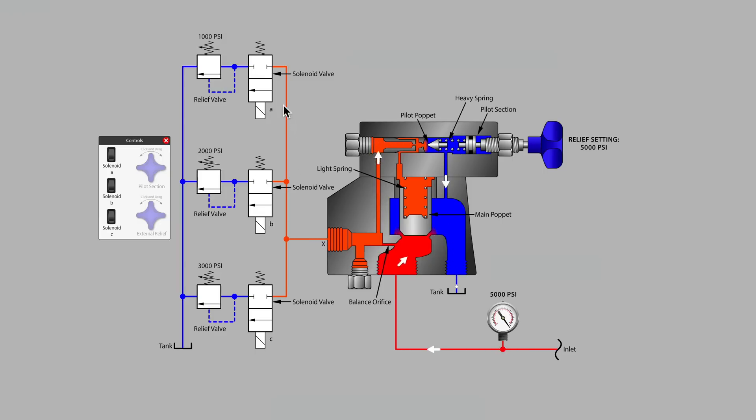...each with a normally closed solenoid valve following on to another small direct acting relief valve being used as a pilot section to control the main poppet in the main relief valve. On the top branch our remote relief is 1000 psi, in the middle it's 2000 psi, and at the bottom branch 3000 psi.